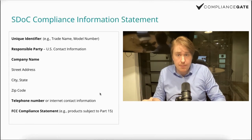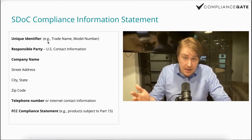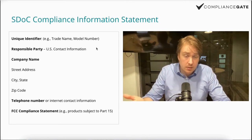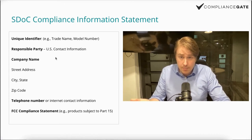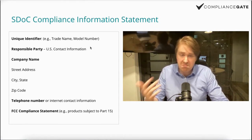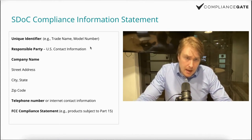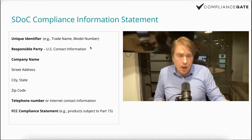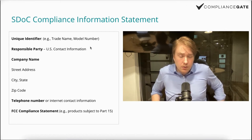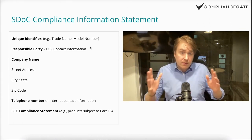A core part of the SDOC procedure is creating the SDOC compliance information statement. You need a unique identifier, a trade name, a model number to identify the product, and a single responsible party with US contact information — company name, street address, city, state, zip code, and telephone number or internet contact information. Finally, you need an FCC compliance statement, which you can find on the FCC website or in the eCFR. They provide different options depending on the type of product, but there is a standard compliance statement most useful for consumer electronics.